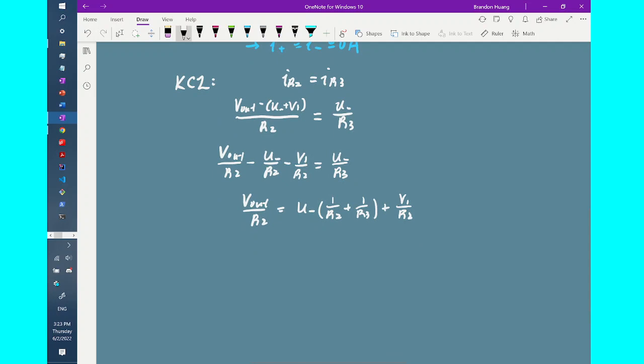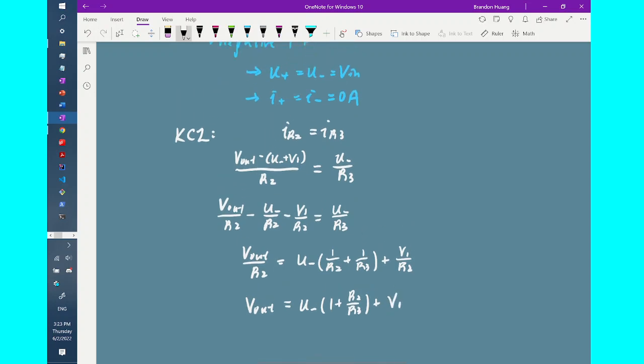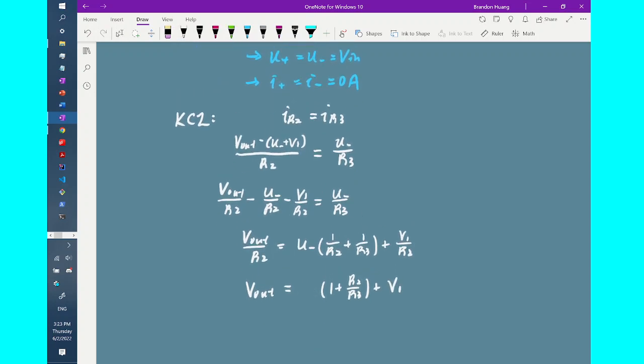Okay, so now what I need to do is just to multiply both sides of the equation by R2. So that means I have U_- times (1 plus R2 over R3) plus V_1. And don't forget that U_- is actually equal to V_in due to the golden rule, so I can just replace the value of U_- with V_in.